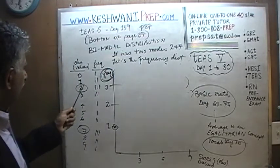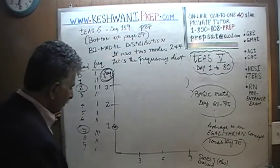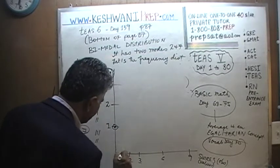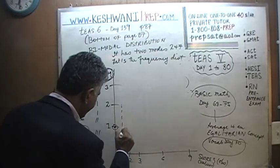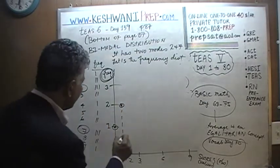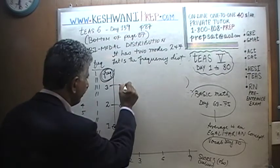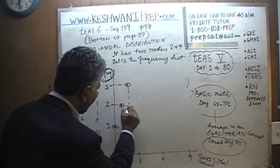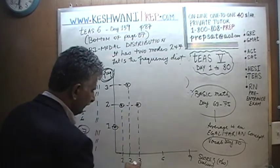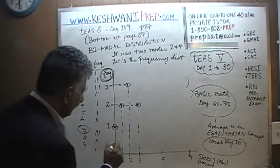Let's pick up speed. A score of 1 appears twice. A score of 2 appears 3 times. A score of 3 appears twice. A score of 4 appears once.